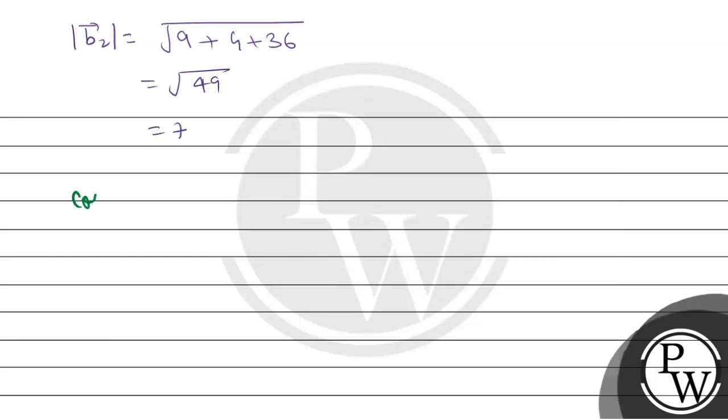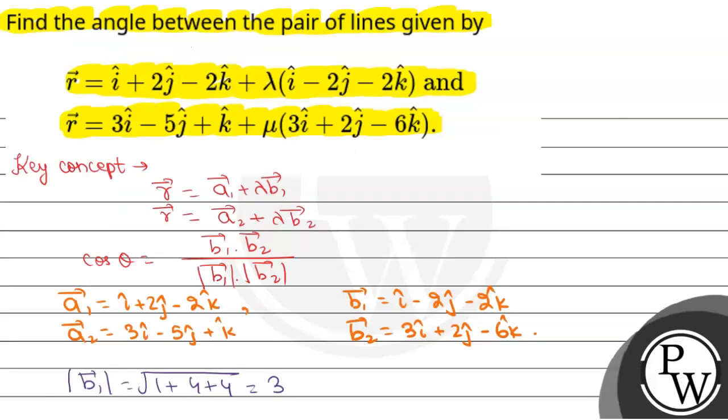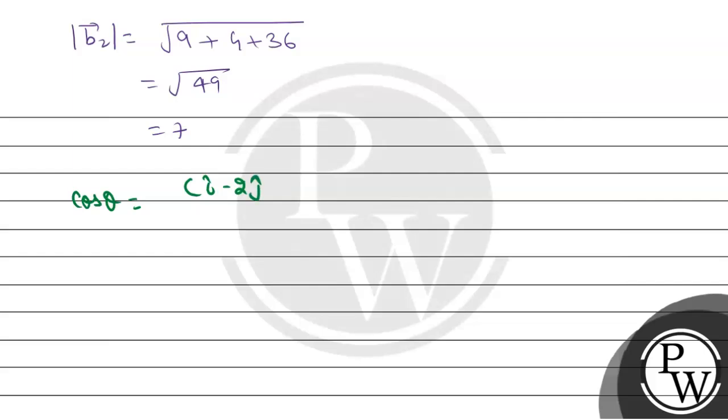So cos theta is equal to b1, which is i cap minus 2 j cap minus 2 k cap, multiplied by dot product of